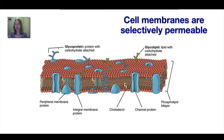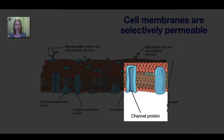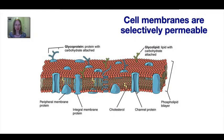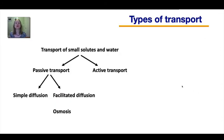I'm assuming you remember the structure of a plasma membrane. This picture is fairly detailed; if you don't remember all the components that's okay. The parts most crucial for this lesson are the phospholipid bilayer and the transmembrane proteins that span the bilayer.